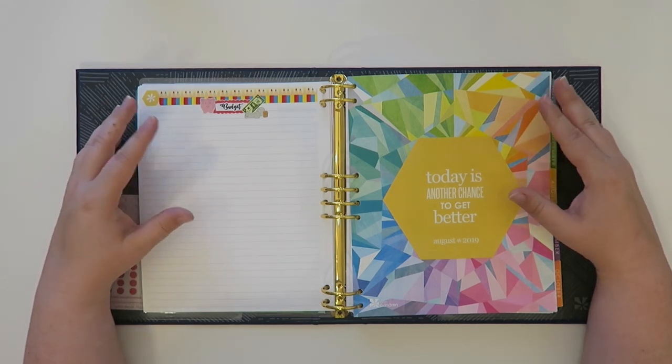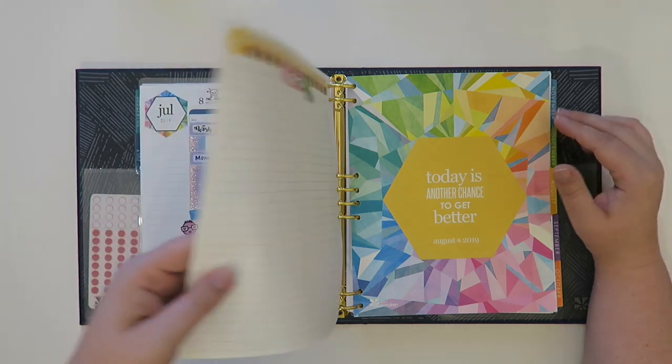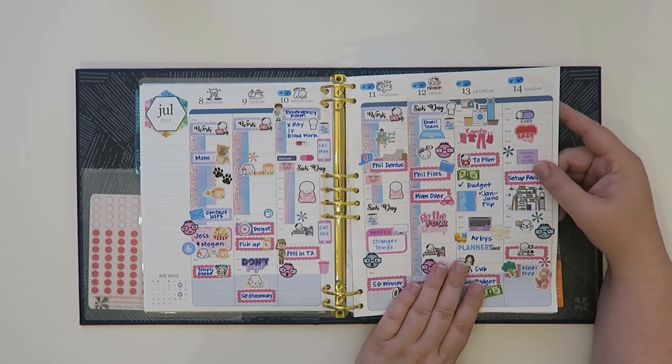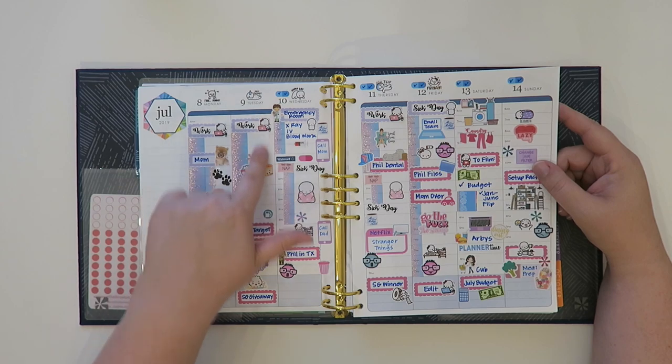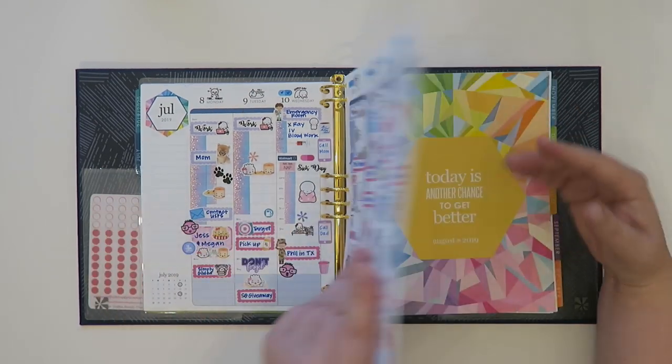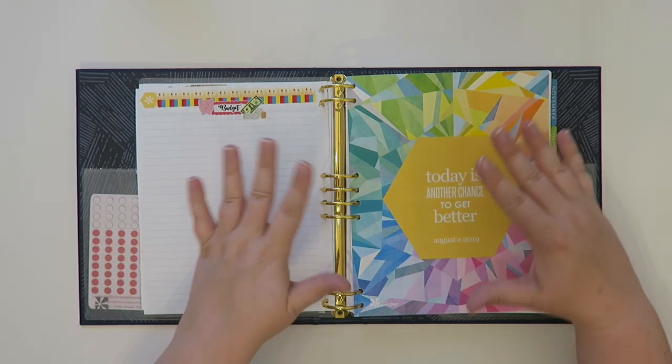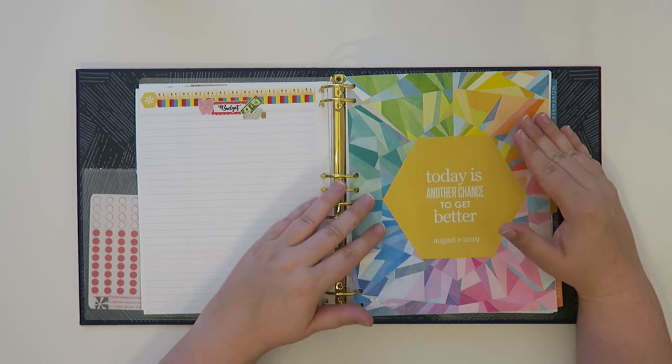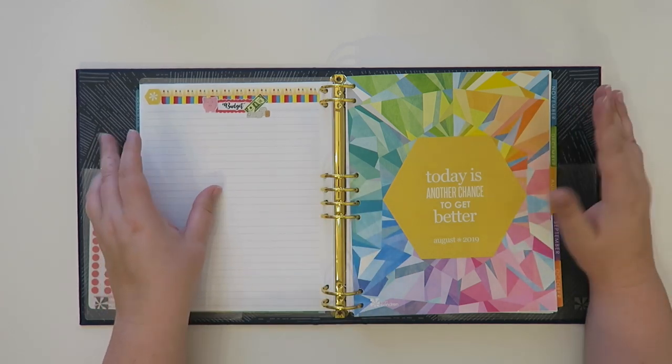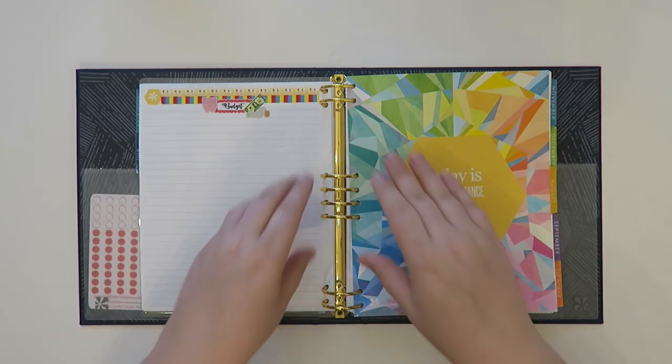I am currently using an Erin Condren binder. I do use an hourly version so this is actually a week that happened before but it is an hourly layout which I love. So that's what I chose and then I have it in the colorful version. There's also a neutral version too which is kind of more of a gray pastel scale which is also very beautiful. And if you're interested in any Erin Condren products I will have the links down below for you guys.